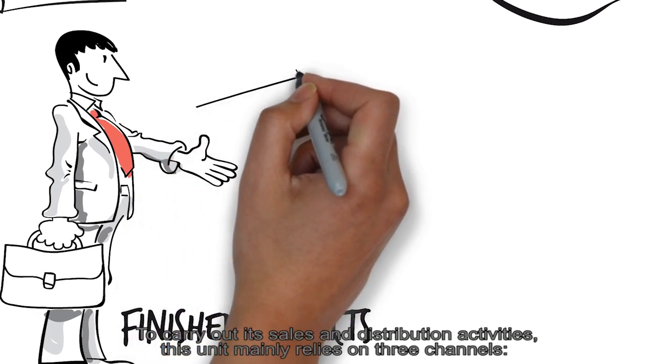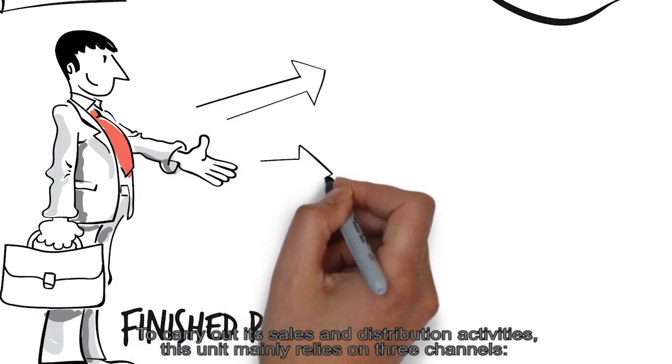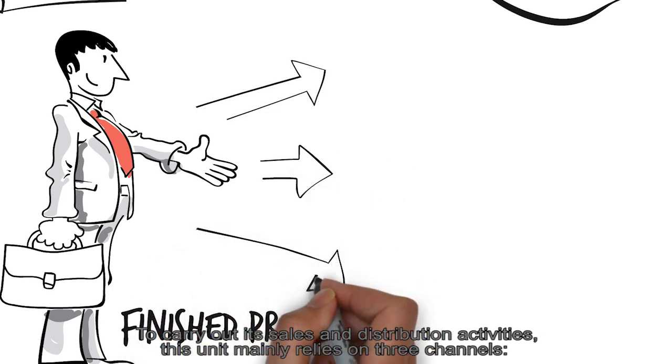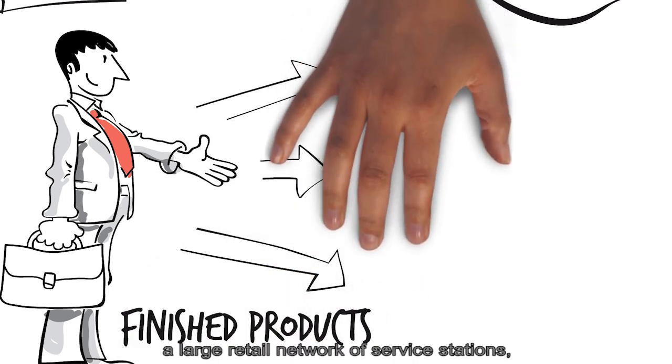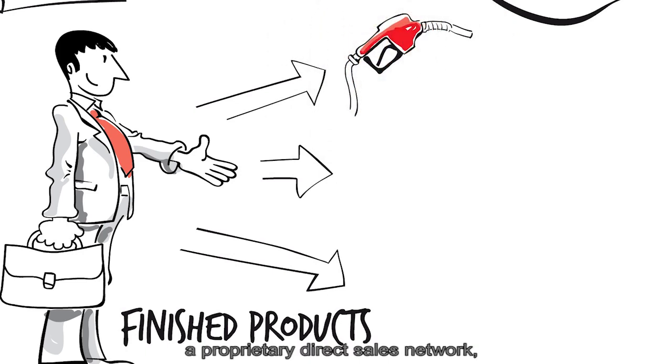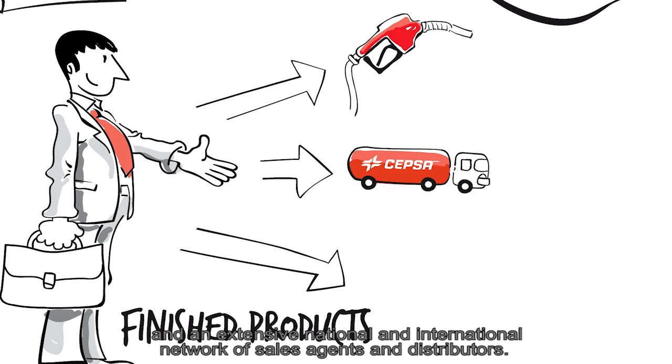To carry out its sales and distribution activities, this unit mainly relies on three channels: a large retail network of service stations, a proprietary direct sales network, and an extensive national and international network of sales agents and distributors.